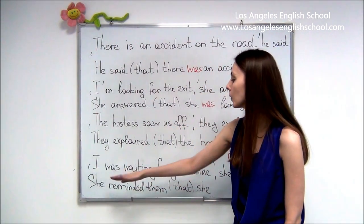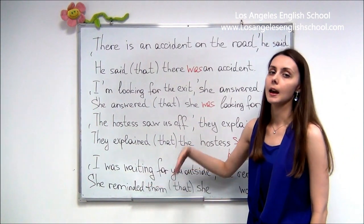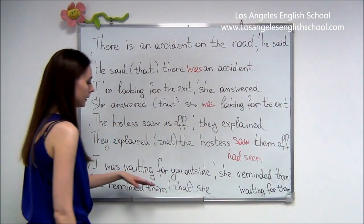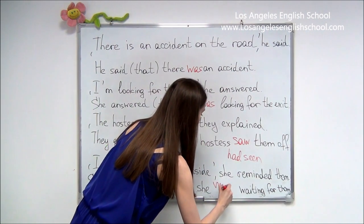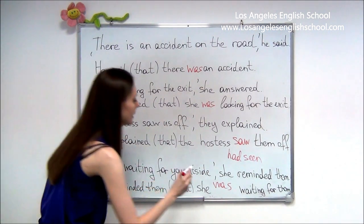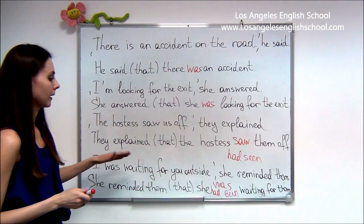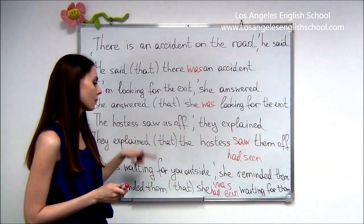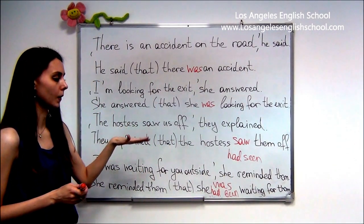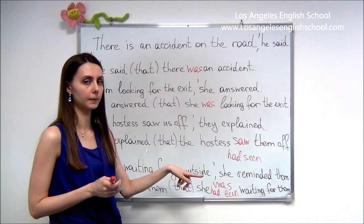Here we have the past continuous tense: 'I was waiting for you outside,' she reminded them. Again we have two choices. You can leave the past continuous and say she reminded them that she was waiting for them outside. Or you can use the past perfect continuous: she had been waiting for them outside. So past continuous can stay as is, or transform into past perfect continuous.